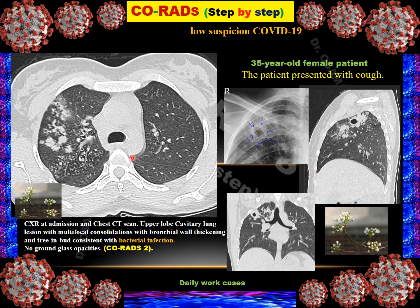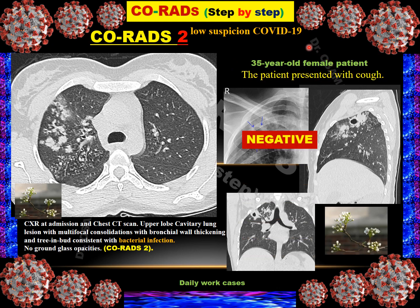Case 13: Frontal chest radiograph showing a cavity confirmed on sagittal and coronal reformatting, with areas of consolidations and tree-in-bud appearance. Presence of tree-in-bud, cavity, centrilobular nodules, and consolidations makes the classification CO-RADS 2 — meaning low suspicion of COVID-19. RT-PCR was also negative for this patient.